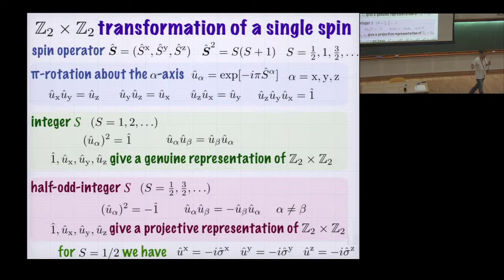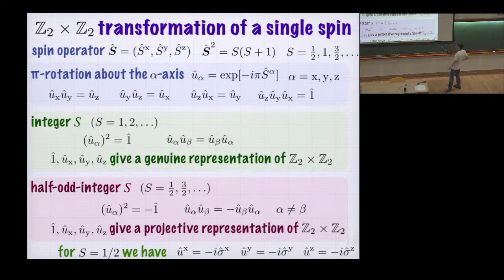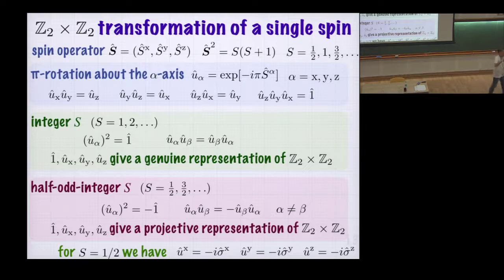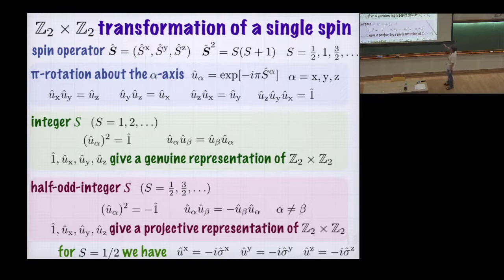For half-integer spin—like spin one-half—these pi rotation operators are exactly given by the Pauli matrices up to a factor of minus i. The square is minus 1, and most importantly, different U's anti-commute with each other. In this case it's not a representation of Z2 cross Z2 because there are these unwanted signs. There is a notion called projective representation in mathematics—these four operators give a representation of Z2 cross Z2 but with extra unwanted signs. This is a non-trivial projective representation of the group, and these two representations are essentially different, which is very important.